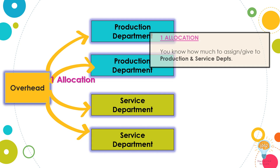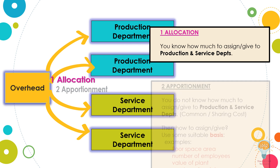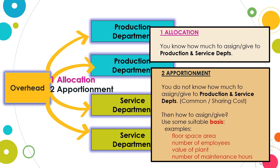Allocation is the process of allocating the overhead cost to the various cost centers. The cost incurred for each of them can be wholly assigned to the cost center without sharing or apportionment. Apportionment involves those overhead costs that are incurred for more than one cost center; the cost should be apportioned among the beneficiary cost centers.